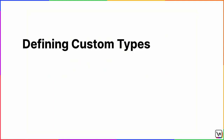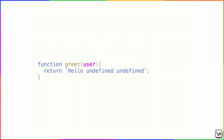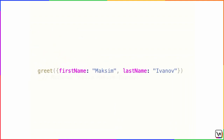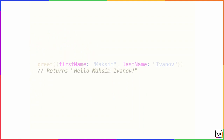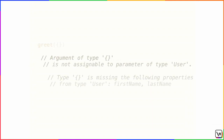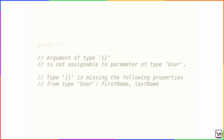The coolest thing is that you can define your own types. Let's say we have a greet function that works with user objects — it generates a greeting using provided first and last names. We can define our own user type and specify it as the type of our argument. Our function will only accept objects matching the user type. If we try to pass something else, like an empty object, TypeScript will tell us that the argument is not assignable to the parameter of type user, because the empty object is missing the first and last name fields.